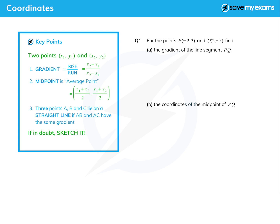Let's have a look at question one. We're given two points P (-2, 3) and Q (2, -5), and we're asked to find first of all the gradient of the line segment and then the coordinates of the midpoint. So let's label up our points. We'll choose P to be x1, y1, so x1 will be -2 and y1 will be 3, and then let's do the same for Q but with x2 and y2.